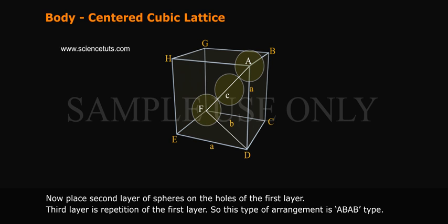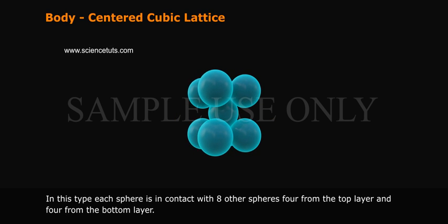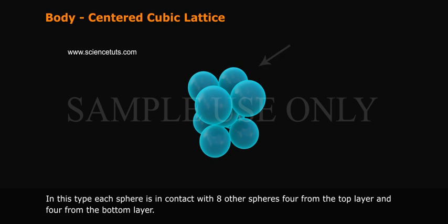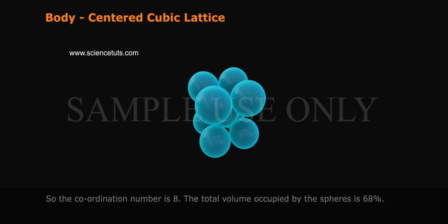So this type of arrangement is ABAB type. In this type, each sphere is in contact with 8 other spheres, 4 from the top layer and 4 from the bottom layer. So the coordination number is 8. The total volume occupied by the spheres is 68%.